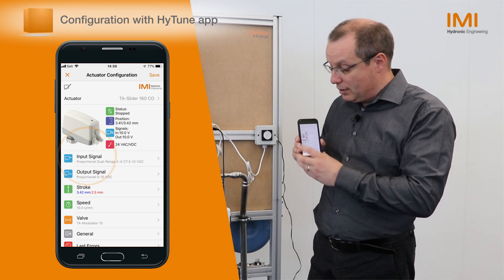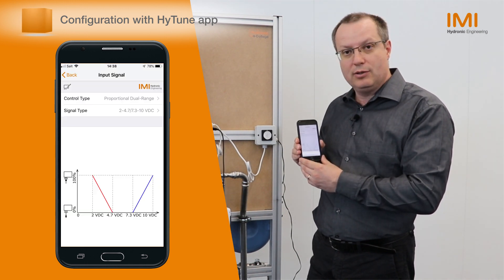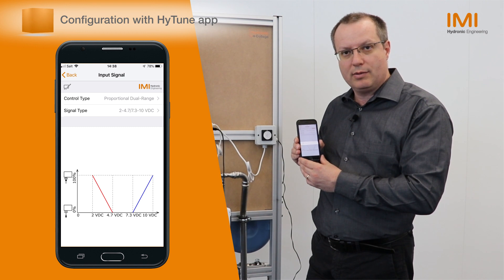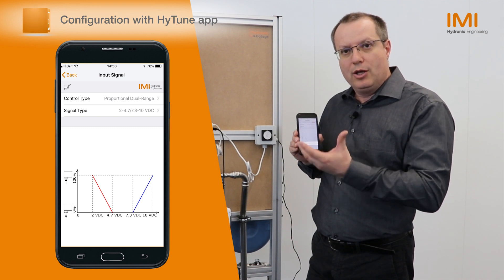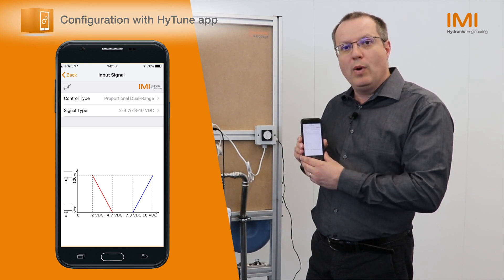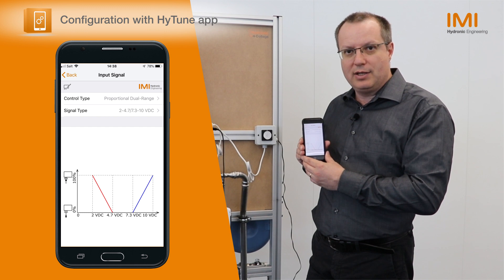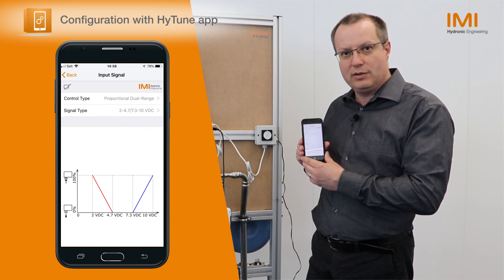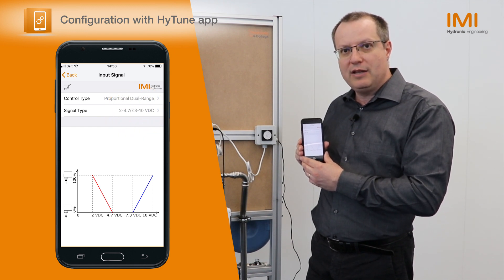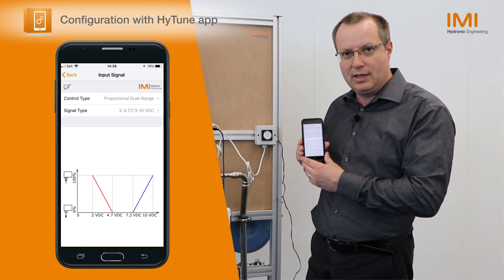First, you need to define the input signal to the actuator. You need to pick one of the dual ranges available. Here, as an example, the 2–4.7 / 7.3–10V range has been selected.